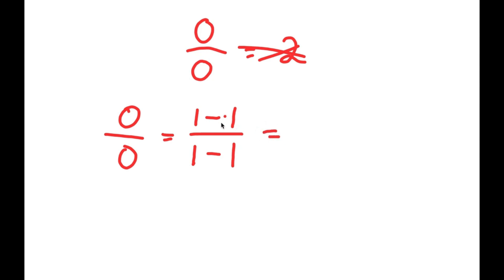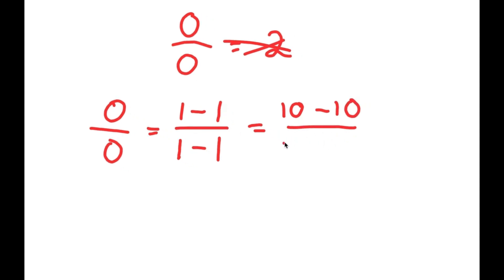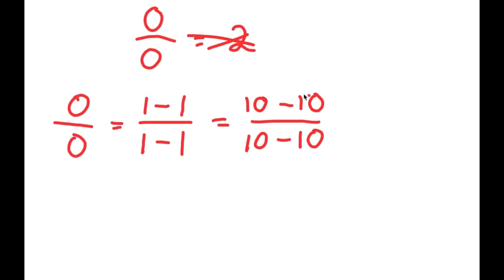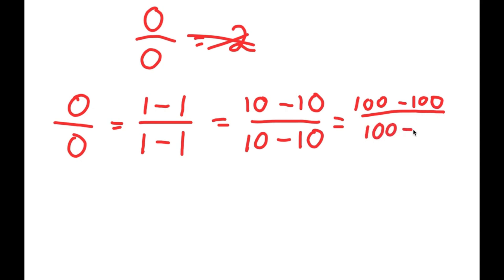Now, if this is true, then this means that this is also the same thing as 10 minus 10 over 10 minus 10 as well. So these two are the same thing. And if this is true, then this is also the same thing as 100 minus 100 over 100 minus 100.